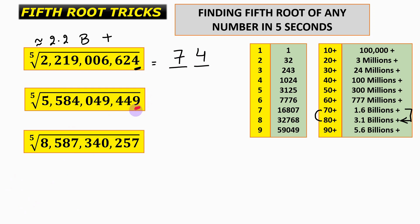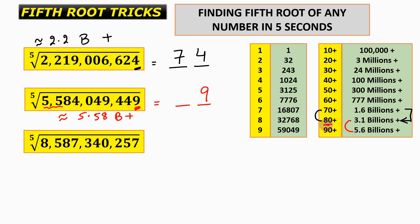Next: the unit place is 9. This number is approximately 5.58 billion, which lies between 3.1 billion and 5.6 billion, so the answer lies between 80 and 90. The unit place is 9 and the tens digit is 8, giving us a fifth root of 89.